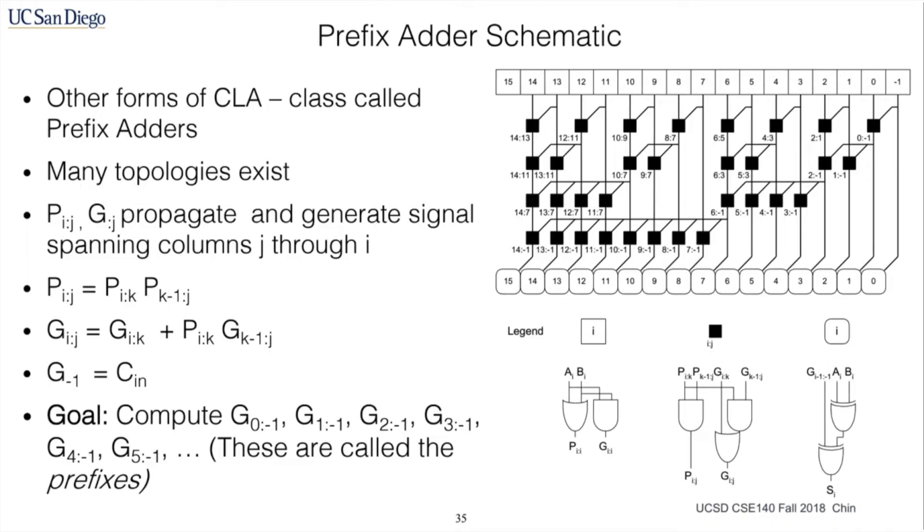As either Prof. Chin or Prof. CK explained in class, prefix adder is another form of the CLA, and what you need to really focus for this schematic is the propagate and the generate signals, which are the pij and the gij. And there are some little notches that you need to know throughout the calculation.